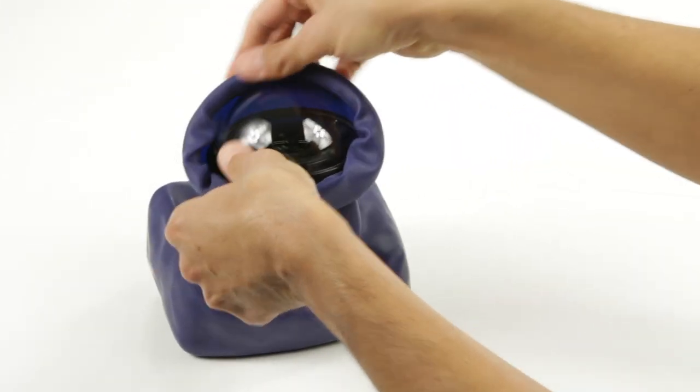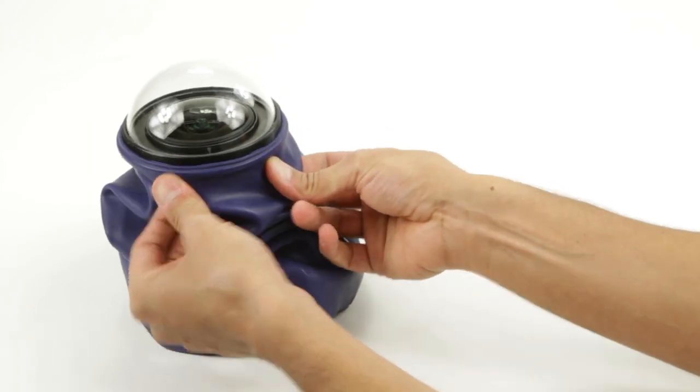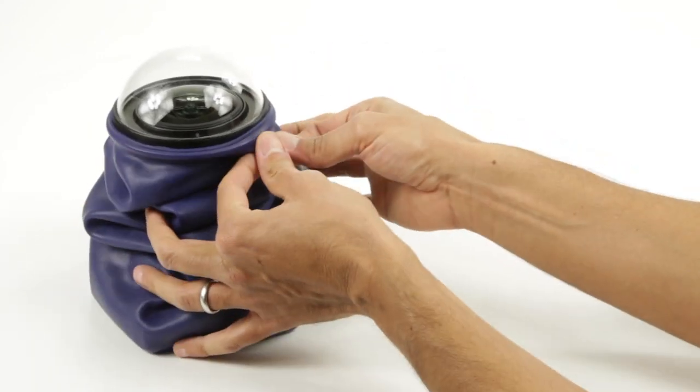Unroll the OutX cover onto the dome lens lip. Line up the cover's lip around the dome lens just like the other seals OutX uses.